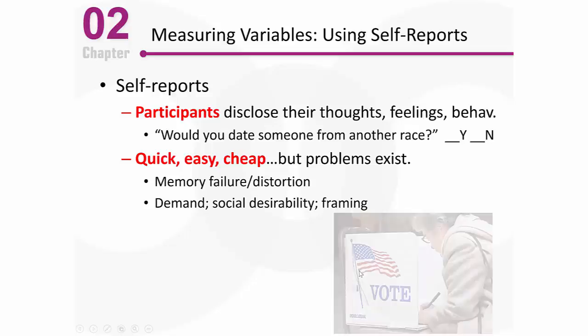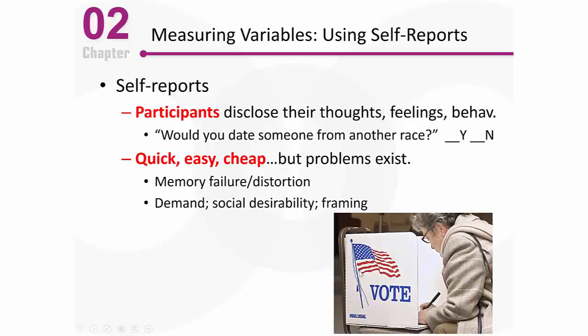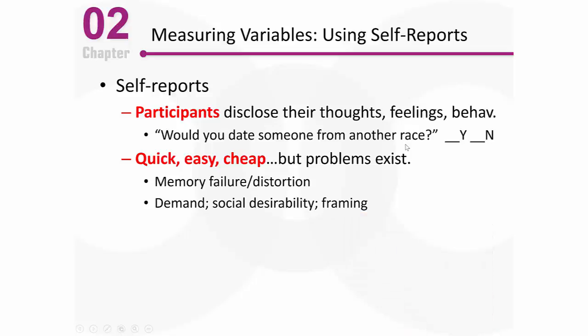Social desirability is another problem. Let's say I ask if you're planning to vote in an upcoming election. Voting is something we hold dear in our society — people aren't typically proud to say they stayed home. So you might respond in a socially desirable way and say yes, of course I plan to vote, but you really don't. Similarly with interracial dating — you might say yes even though you wouldn't, just responding in a socially desirable way.